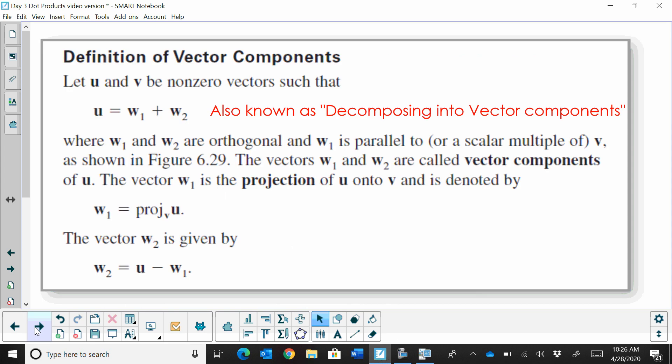Let's define what the definition of vector components are. We have two vectors, u and v, and they are non-zero vectors. We're going to take vector u and decompose it into two separate vectors. We're going to call those w sub 1 and w sub 2.